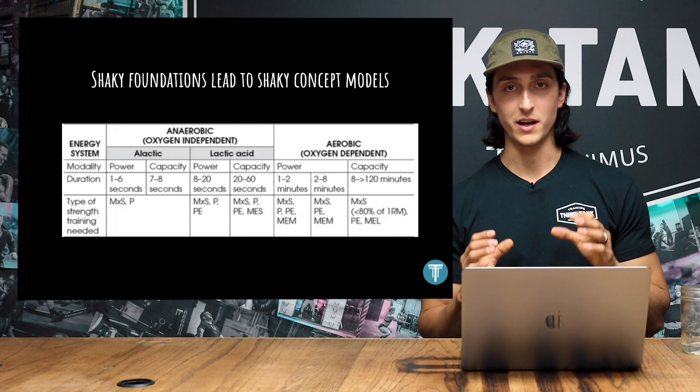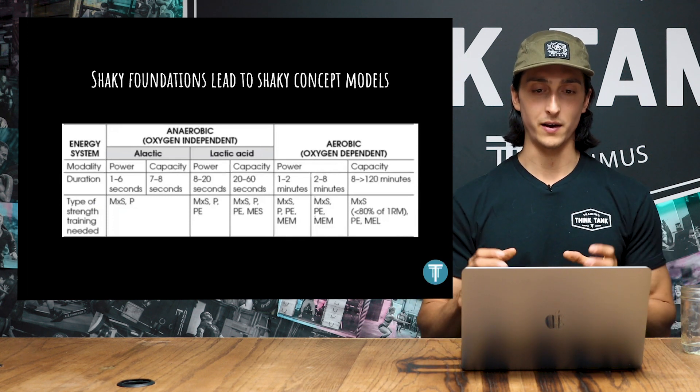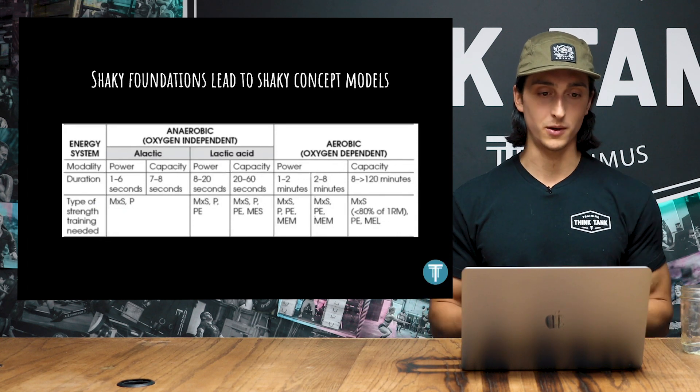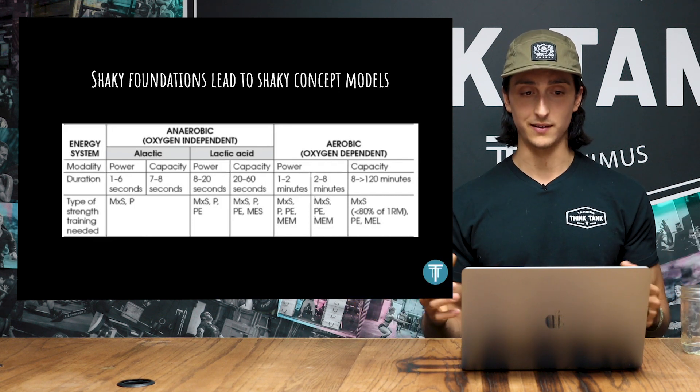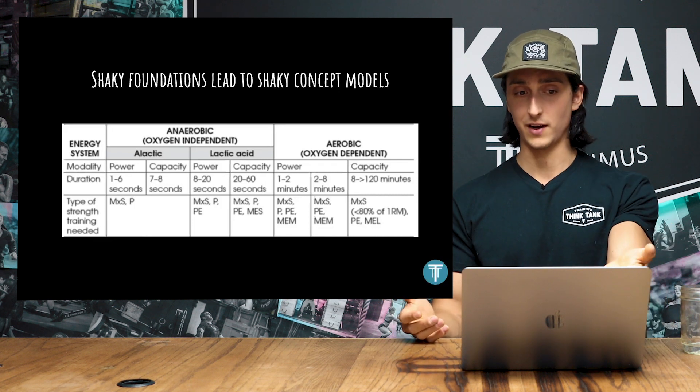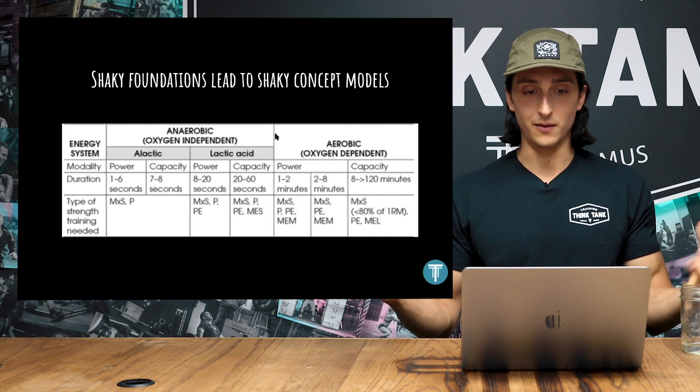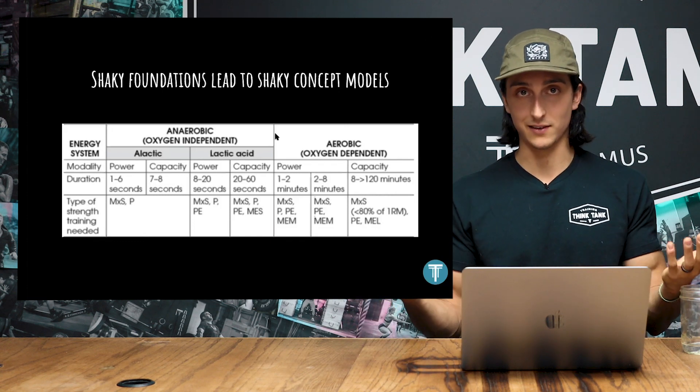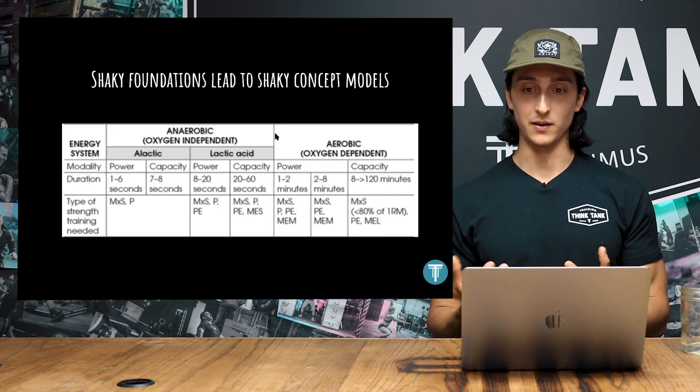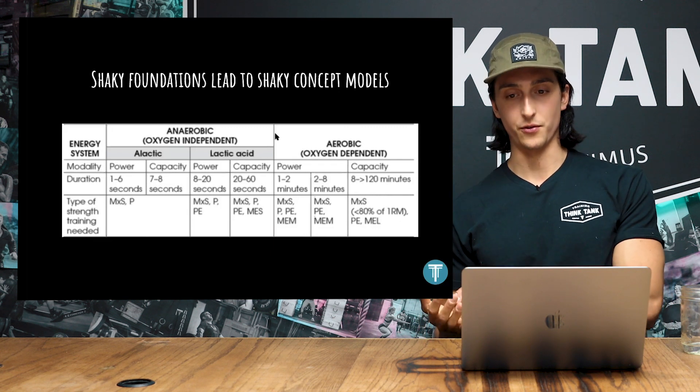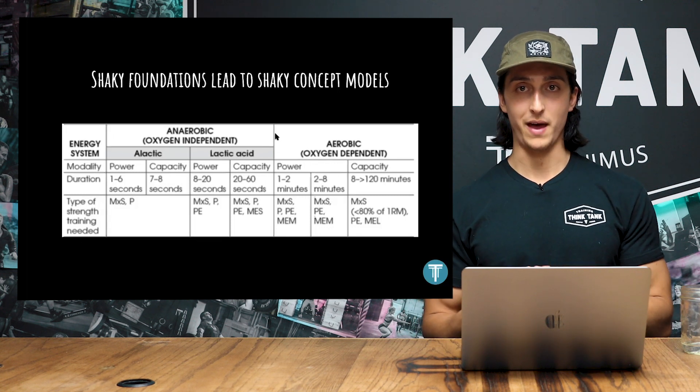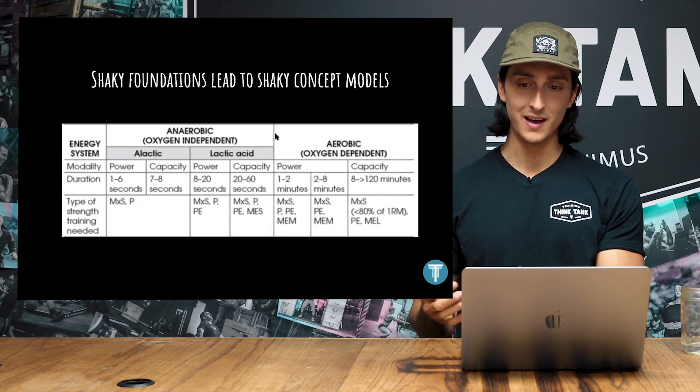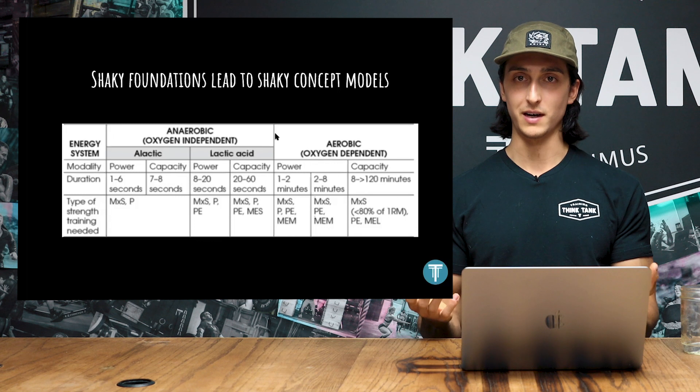We also get to this point, shaky scientific foundations lead to shaky concept models. So we have this chart here, and it's a standard energy system trainings chart that people use. We have alactic power from one to six seconds, alactic capacity from seven to eight seconds. Well, how is it alactic if we already have lactate circulating in well-oxygenated tissue? How is it anaerobic if we have oxygen in the muscle? It says this is an oxygen-dependent process. Then we have lactic acid power and capacity. Lactic acid can't form under physiologic conditions in the body. So that's not even a real molecule that exists in the body, it would be lactate. And again, it's kind of pedantic to get into this, but it is important because it's very practical. We don't get into all this science for its own sake. If we understand bioenergetics, we could come up with accurate concept models that drive meaningful performance outcomes. But when we don't understand bioenergetics, we come up with charts like these, things like the map models of energy system training. And these things start to fall apart because they don't really make sense in light of everything that we know about physiology.